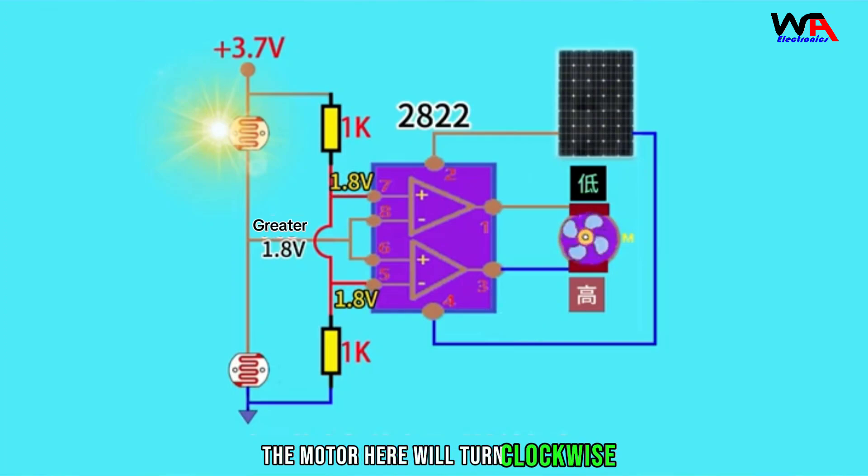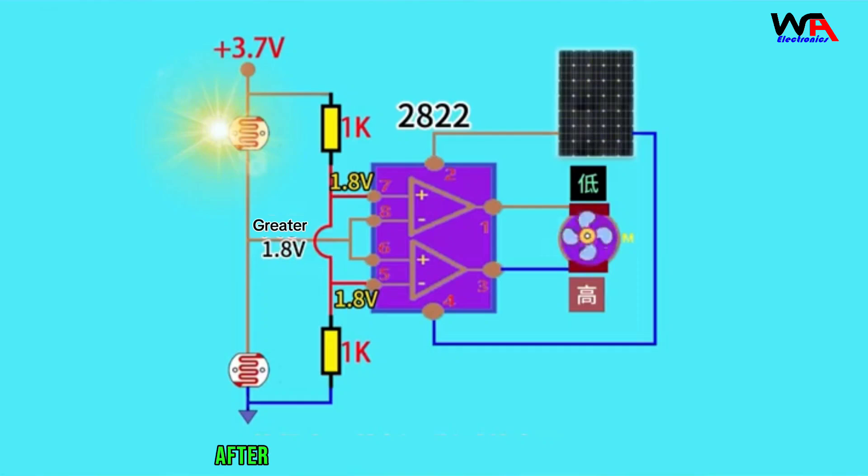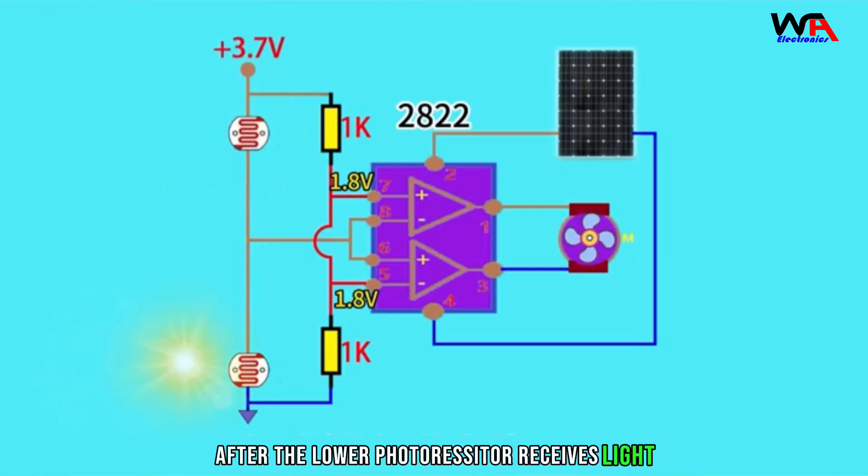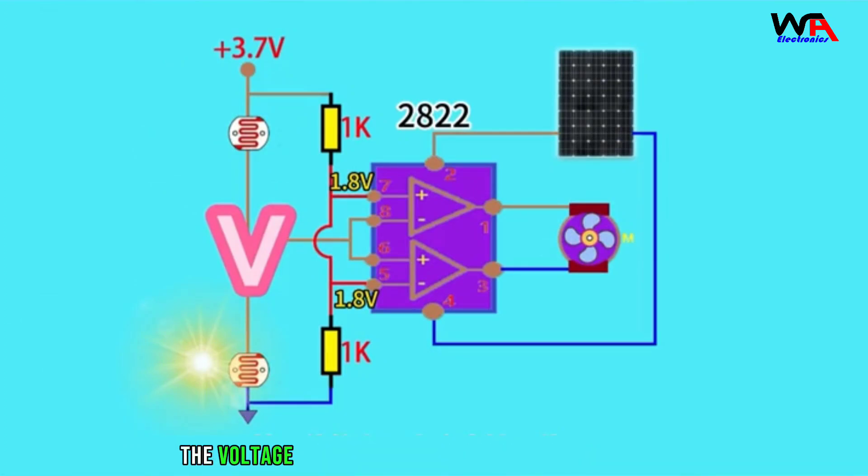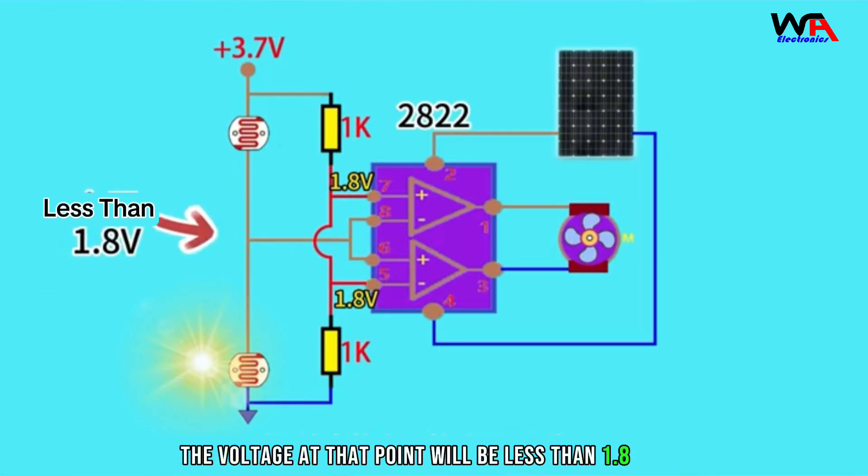The motor here will turn clockwise, so that the solar panel gradually faces the sun. After the lower photoresistor receives light, its resistance will be less than the upper photosensitive resistance, so the voltage at that point will be less than 1.8 volts.